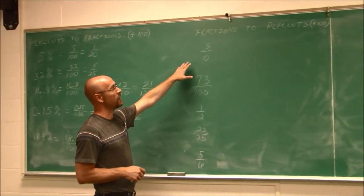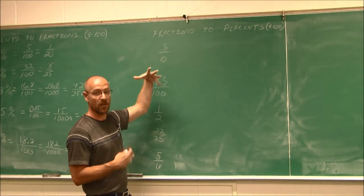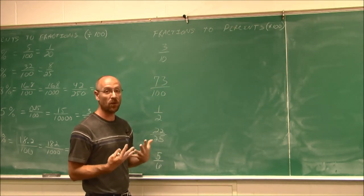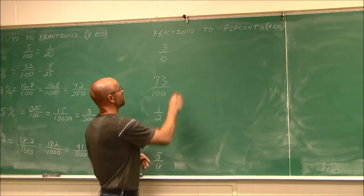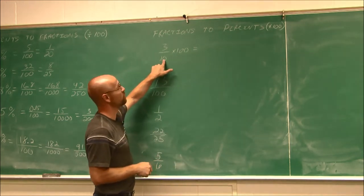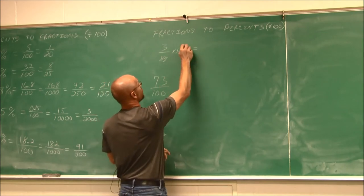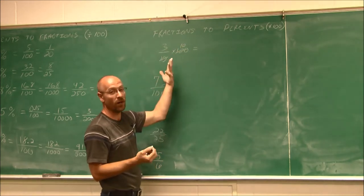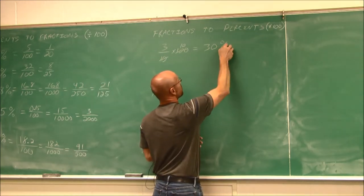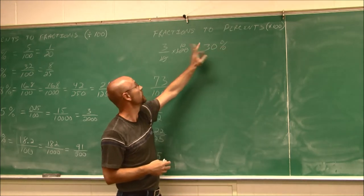Now, what if we're given a fraction and asked to determine what percent? Since both percents and fractions represent parts of the whole, we can convert between them. To convert a fraction to a percent, simply multiply by 100 and simplify. For 3/10, multiplying by 100: 10 goes into 100 ten times, leaving 3 times 10, which is 30. So 3/10 equals 30%.